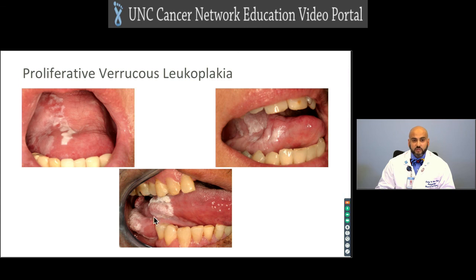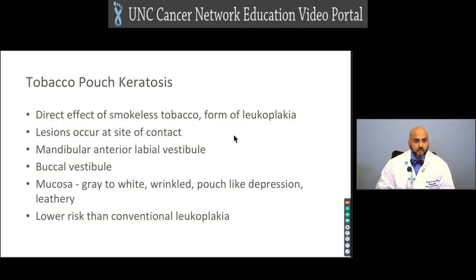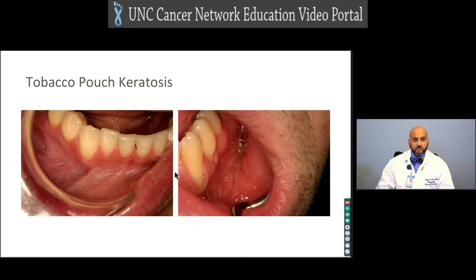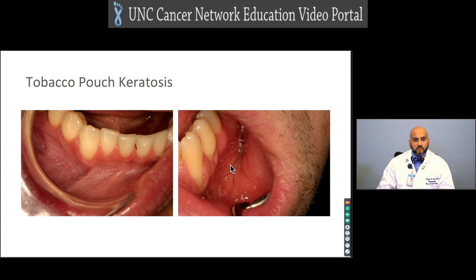Tobacco pouch keratosis is a direct effect of smokeless tobacco and is a form of leukoplakia. The lesion occurs at the site of contact — the anterior labial vestibule or buccal vestibule — and looks like a wrinkled pouch in a depression where tobacco is held, with a leathery appearance. This is pretty common, especially in North Carolina, where there are many smokeless tobacco users. Surveilling these patients is important because they're at risk of developing oral cavity cancer with continued tobacco use.